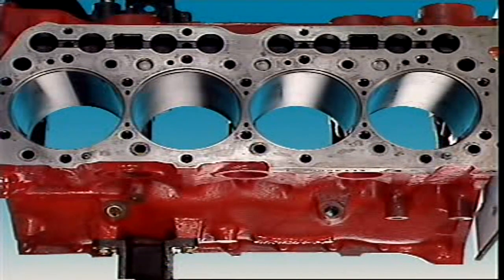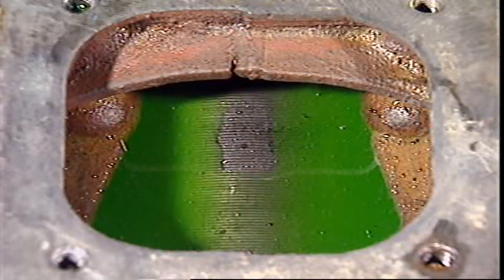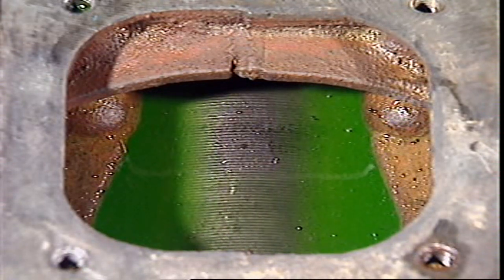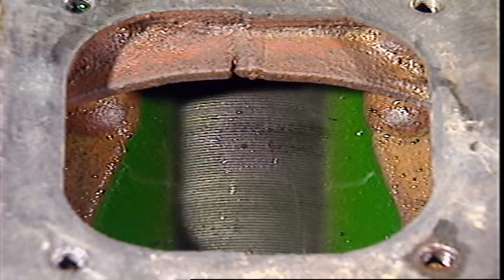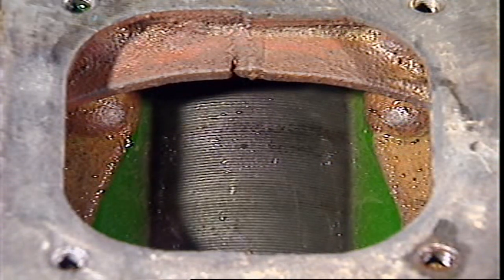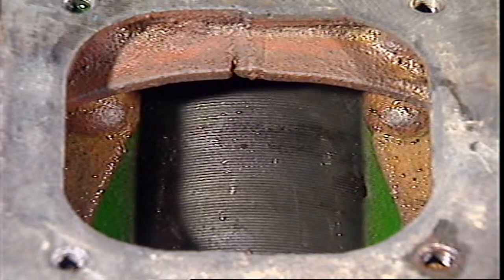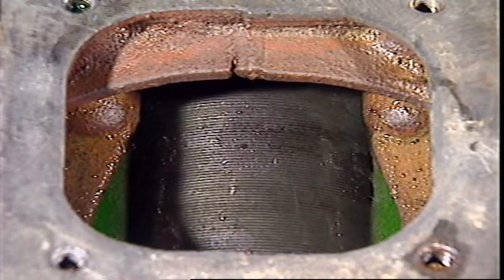It's not a tight fit and it can be replaced if it's worn. With a wet sleeve, the outer surface is part of the water jacket around the cylinder. It's called wet because it has coolant against its outer surface. This helps speed up heat transfer between the sleeve and coolant.